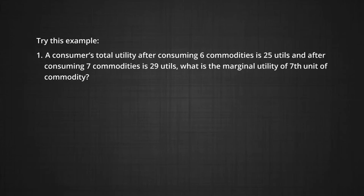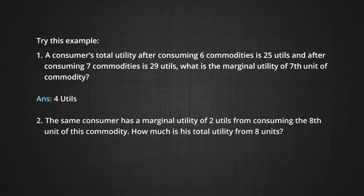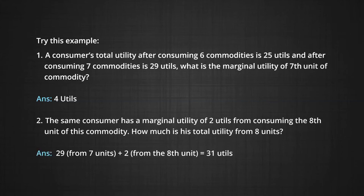Let us try an example. A consumer's total utility after consuming 6 units of a commodity is 25 utils, and after consuming 7 units is 29 utils. What is the marginal utility of the 7th unit? The answer is 4 utils. The same consumer has a marginal utility of 2 utils from consuming the 8th unit. How much is his total utility from 8 units? The answer is 29 plus 2, which makes 31 utils in all.